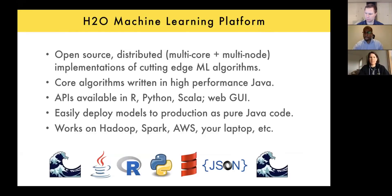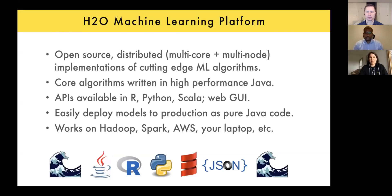H2O was built as a company from the beginning — not an open source project that became a company. The goal from the start was a self-sustaining company around this open source platform. A key design goal was making code easily deployable to production: you don't need to rewrite models in a high-performance language after writing them in R or Python. Models export immediately to Java code and can go directly into production.